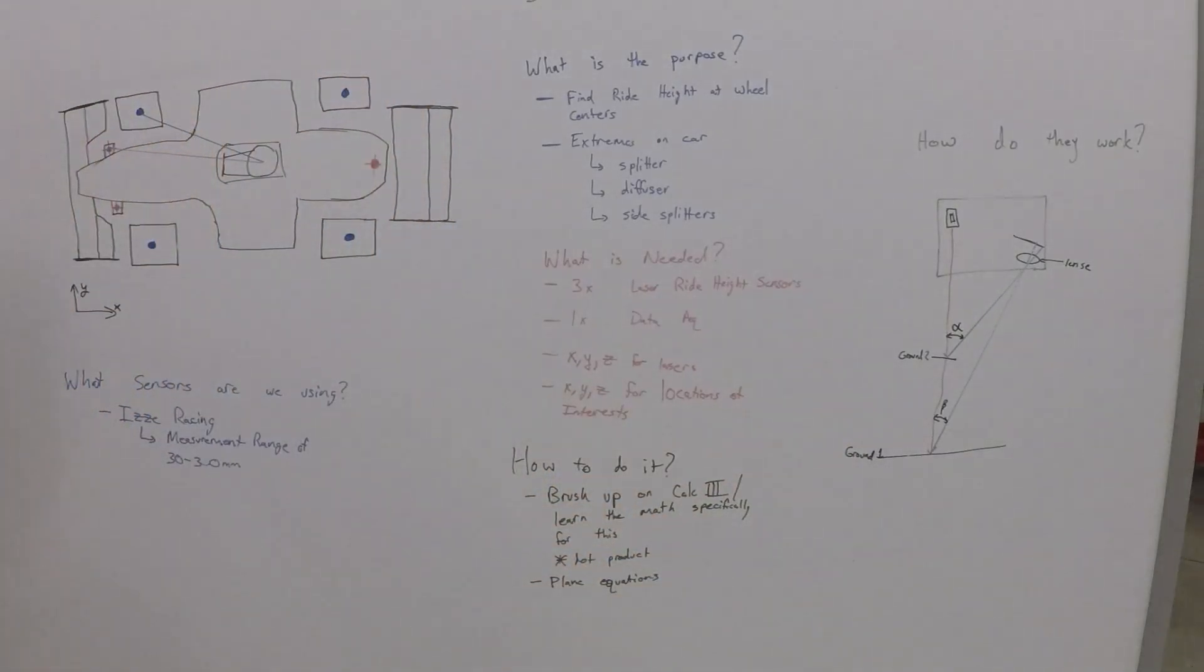What sensors are we using? We're using the Izzy Racing. It has a measurement range of 30 to 300 millimeters, which is plenty for what we need. We're never going to get in the 300 range. And where we have them located, it'll never get below 30. So it's totally good.